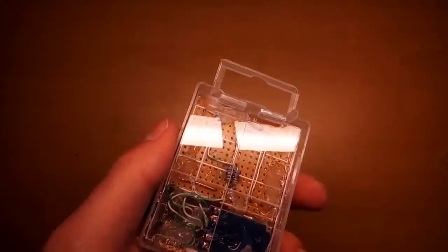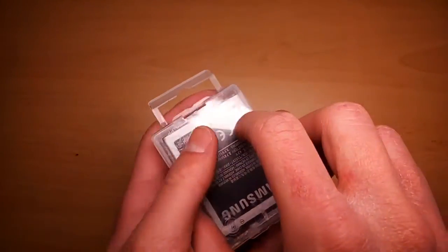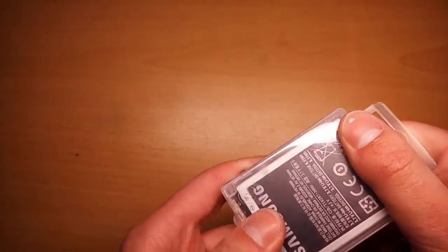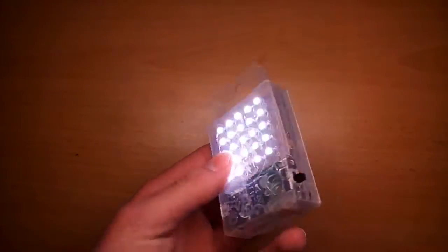The only thing that's left to do now is plugging in the battery, closing up the container, and flipping the switch. It's hard to see it on camera, but the light is actually pretty bright. And if you attach a magnet to the back of it, it makes a great working light for your car.